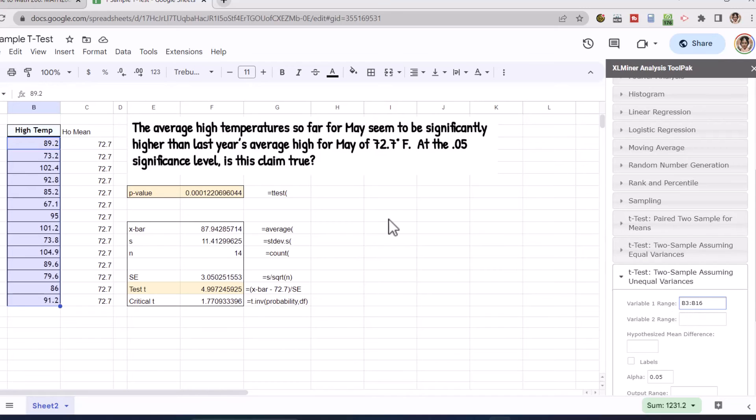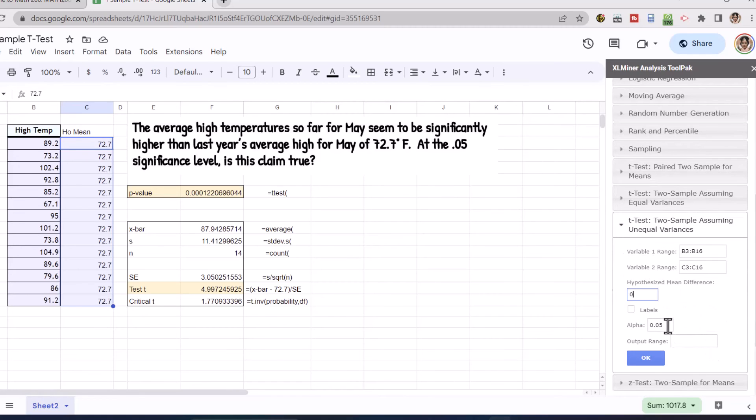Next is my variable two range. I'm going to do the same thing for my hypothesized mean. So click, drag and hold through that to highlight. And then I'm going to click in my variable two range, my hypothesized mean difference. I'm assuming that my sample mean is equal to my hypothesized mean. It's going to give me a difference of zero. My alpha already happens to be set here at 0.05. And they want to know where I want the output. Let's go ahead and put it in this cell. Once I've chosen a cell, I can click in the output range and I'm ready to click OK.